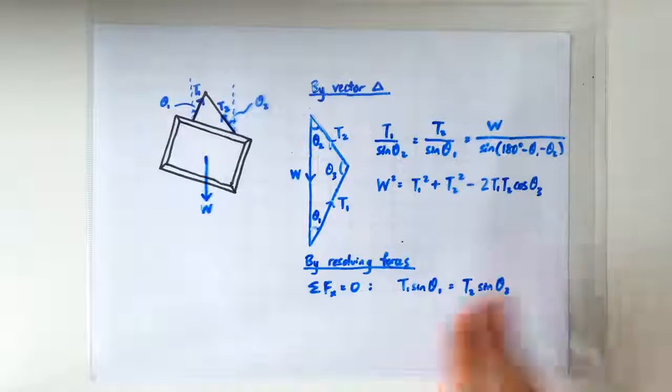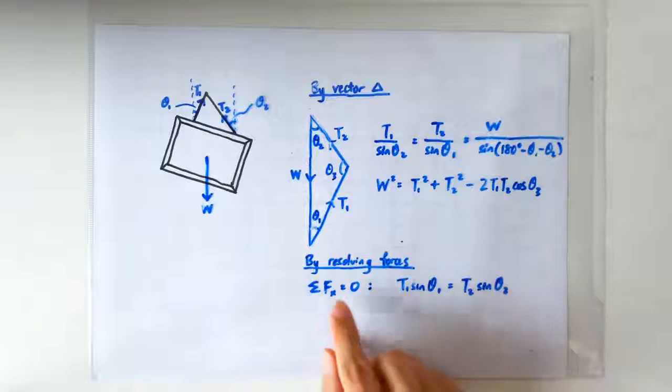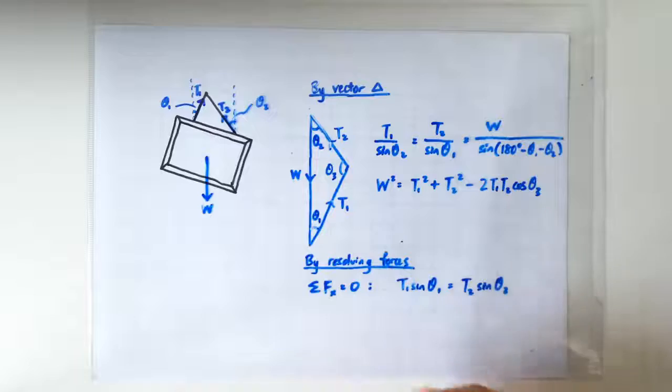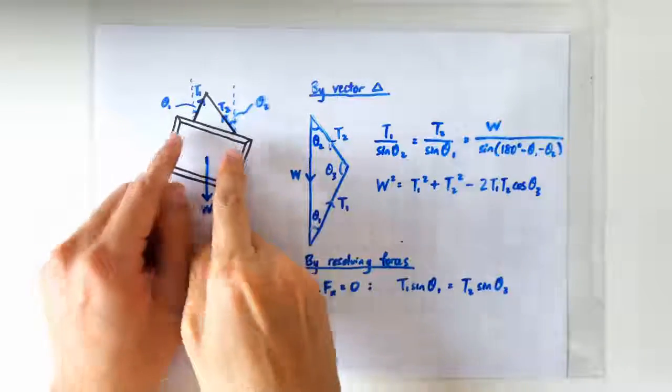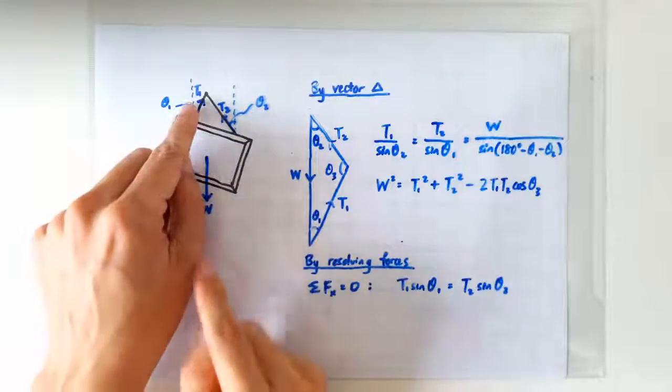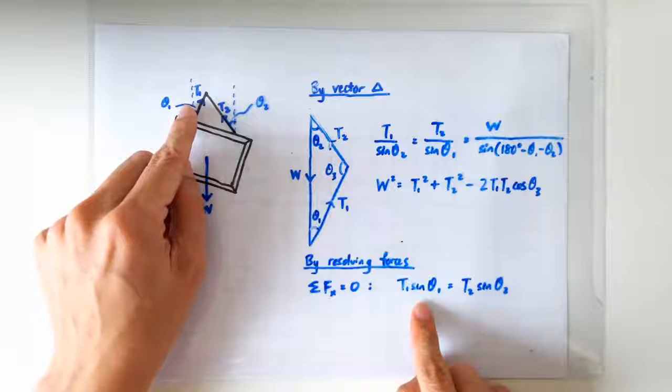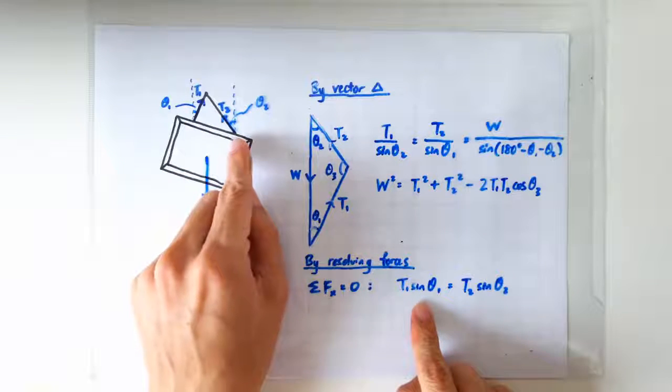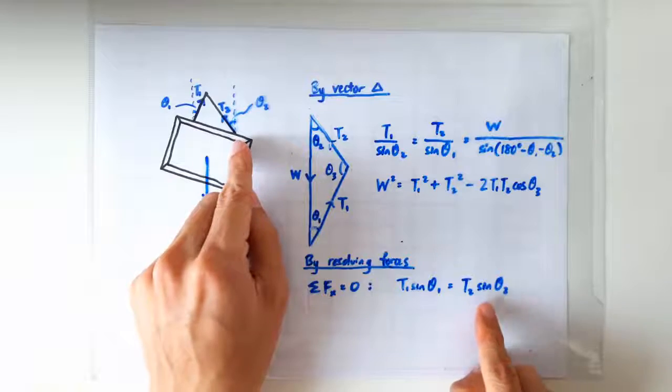Personally I prefer to solve this problem by resolving forces and form one equation by using the fact that horizontally, the horizontal forces should add up to zero. So horizontally, we have the horizontal component of T1, which is T1 sine theta 1, which must balance the horizontal component of T2, which is T2 sine theta 2.